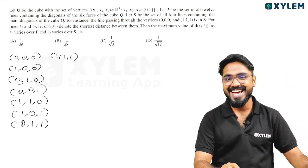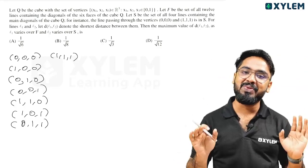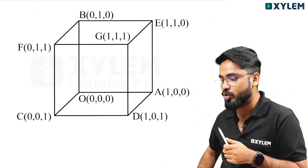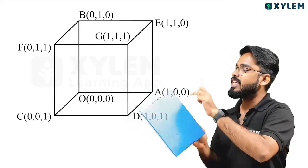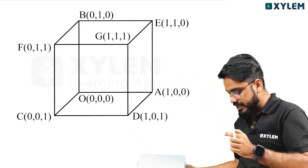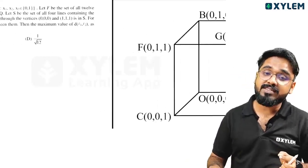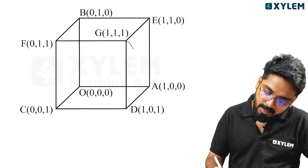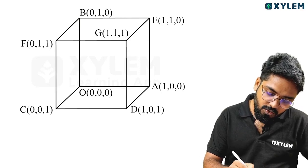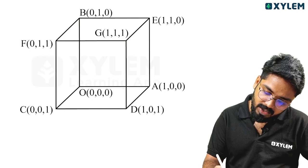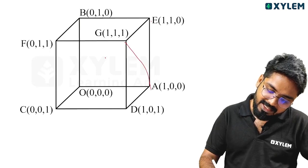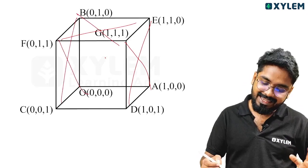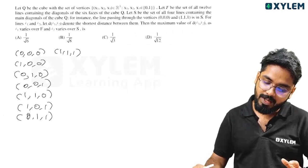Let F be the set of all 12 lines containing the face diagonals of the 6 faces of the cube. What are we doing? A cube has 6 faces. Each face has 2 diagonals, giving 12 face diagonals total. These are the face diagonals in set F.